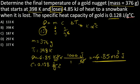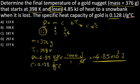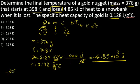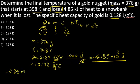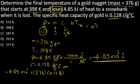Let's plug in these numbers into the equation. Q is -4.85 × 10³ equals m, which is 376, times C, which is 0.128, times ΔT.